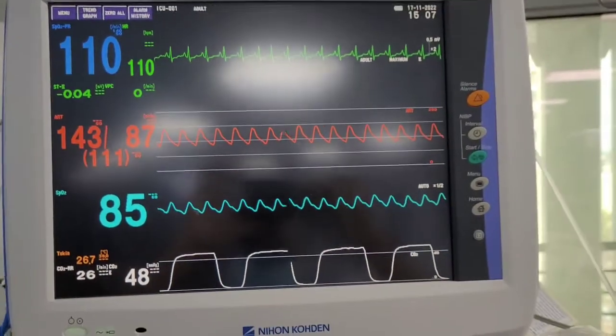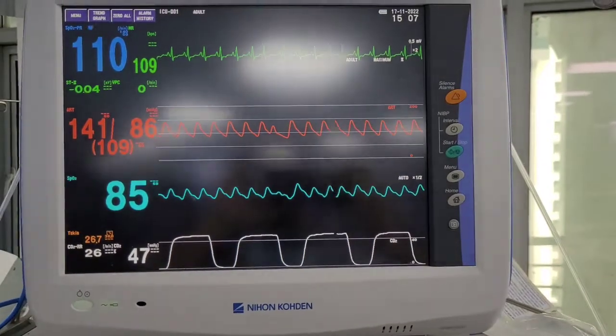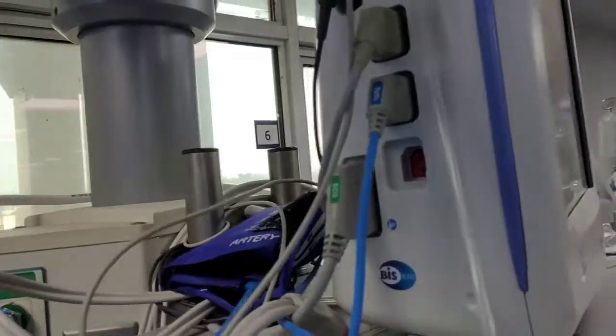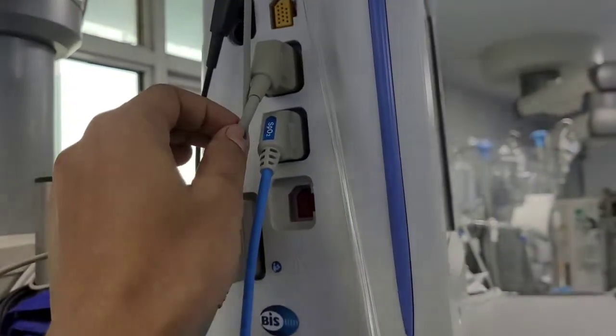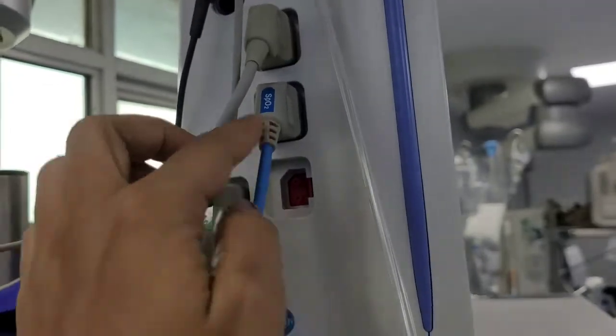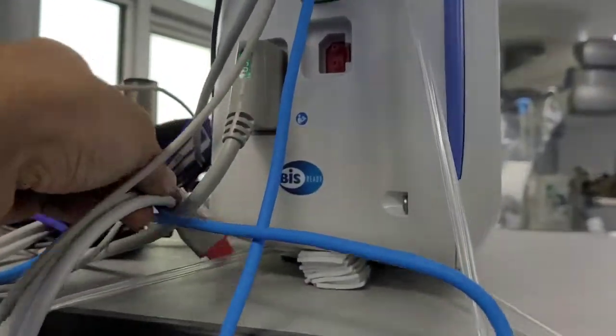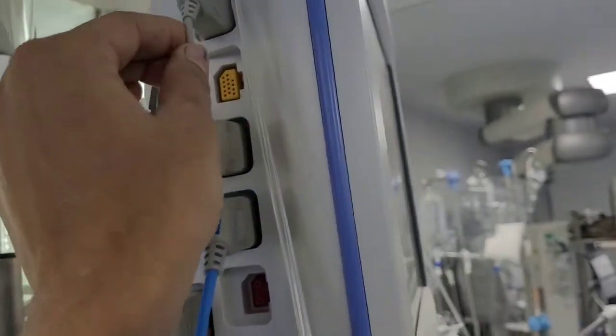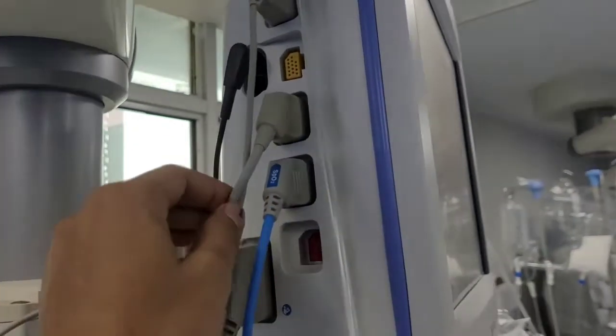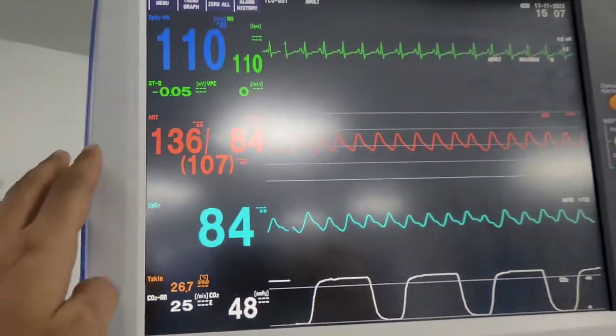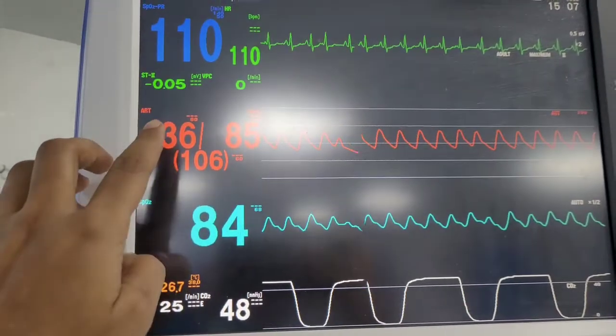This is a multipara monitor with Nihon Kohden. There are the ports and cables - this cable is for arterial monitoring, this is for SpO2, this is for ECG, this is for NIBP (non-invasive blood pressure), and this is for CO2. This cable here is for arterial monitoring.